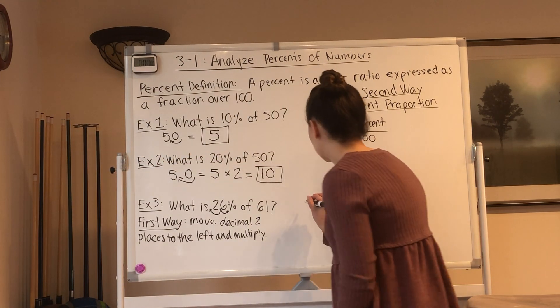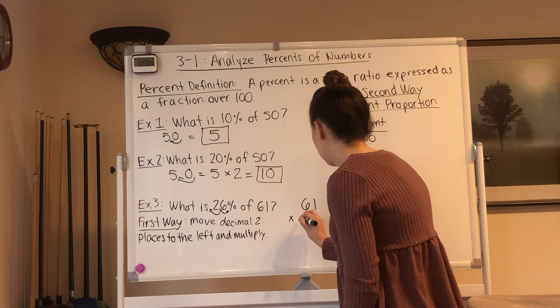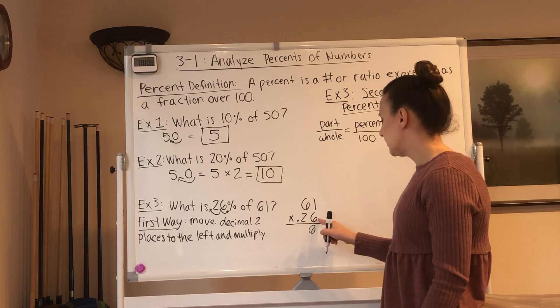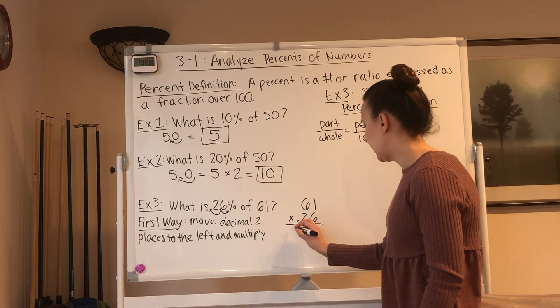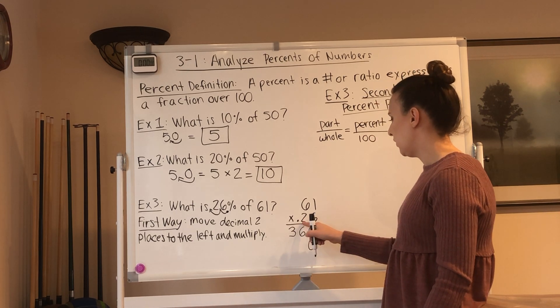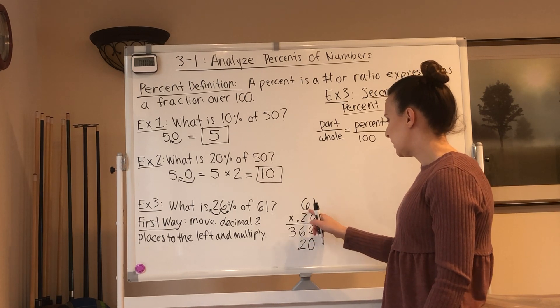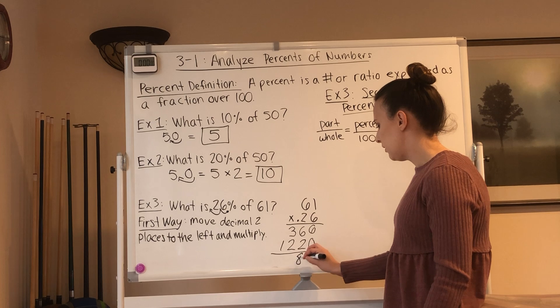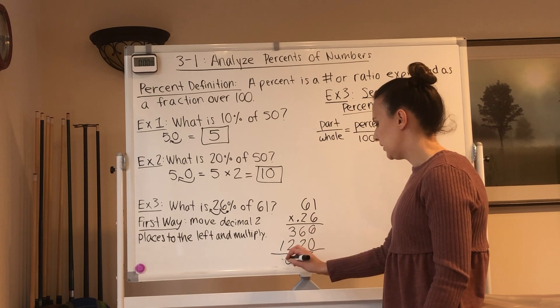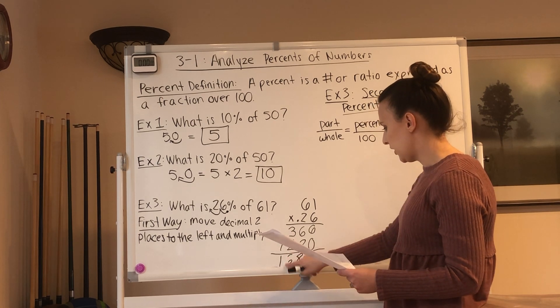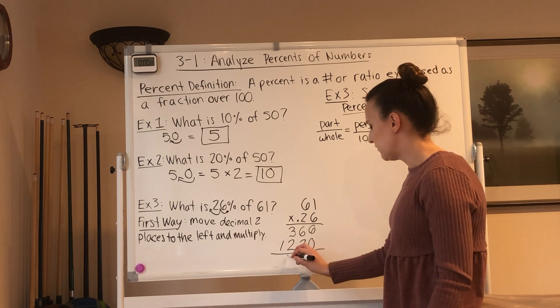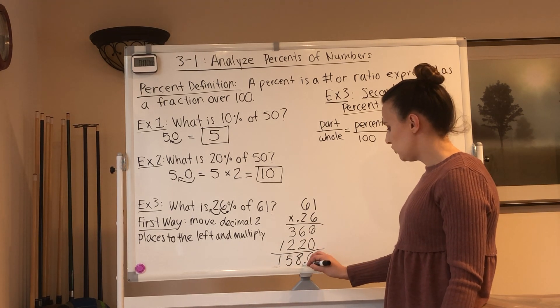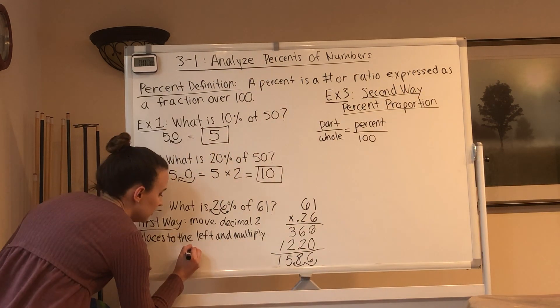So we're going to do this longhand. So we're going to do 61 times 0.26. 6 times 1 is 6. 6 times 6 is 36. Put down the 6. We don't have enough in carry here. We'll just put it here. Put down a 0 to move over. 2 times 1 is 2. 6 times 2 is 12. Add it up. 6. 6 plus 2 is 8. 3 plus 2 is 6. 1 plus 0 is 1. So it should be...oh, I'm sorry. Sorry about that. 3 plus 2 is 5. 1 plus 0 is 1. Now we have two places after the decimal here, so we need to move it over two places. So our final answer is 15.86.